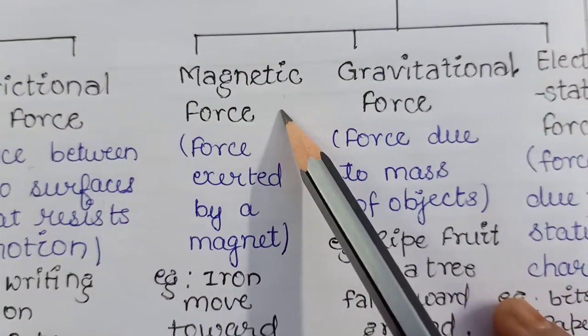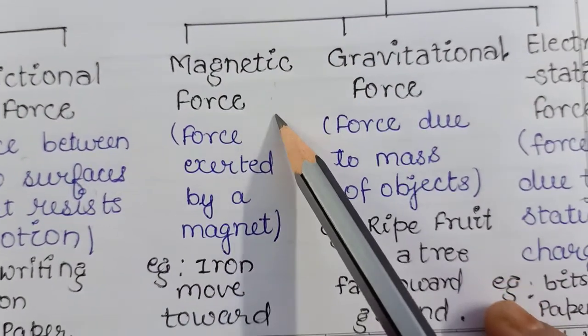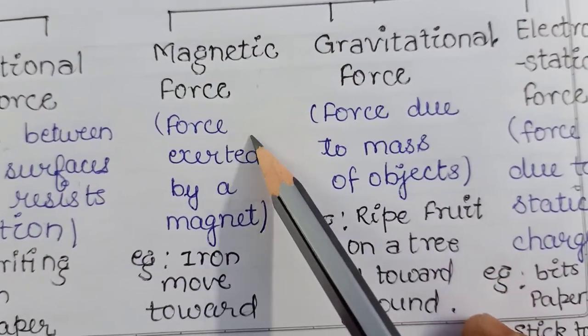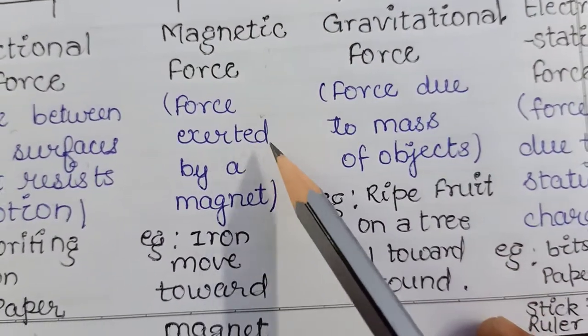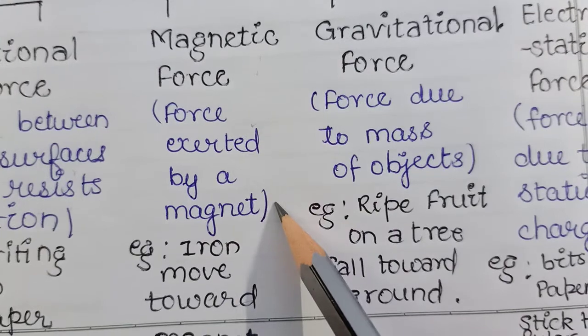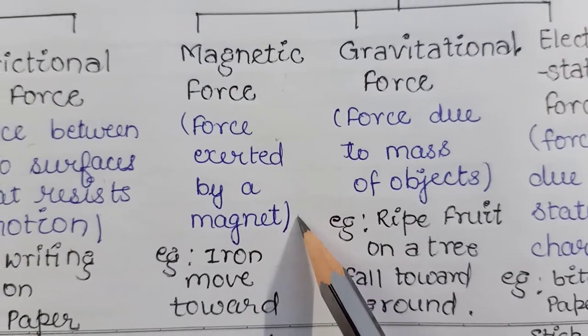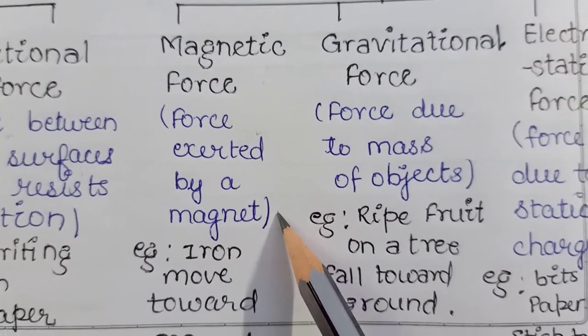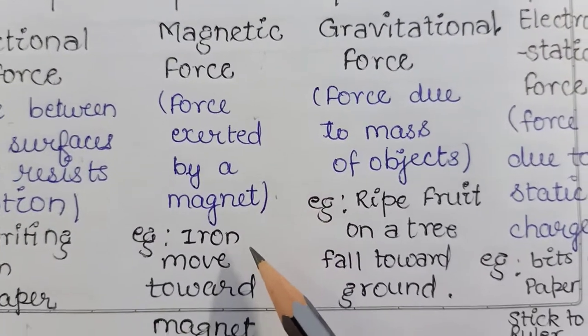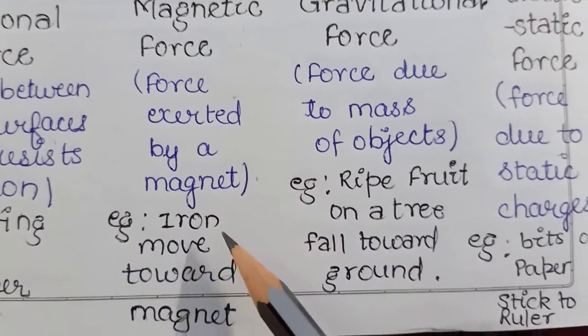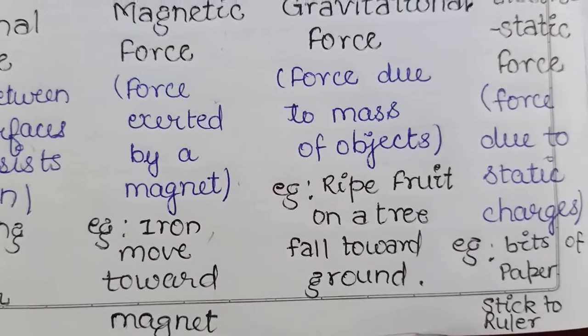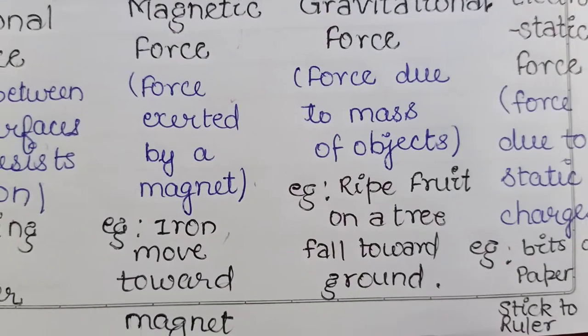What do you understand by magnetic force? Magnetic force is a type of force exerted by a magnet. For example, when iron moves toward a magnet.